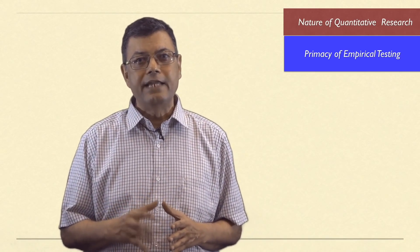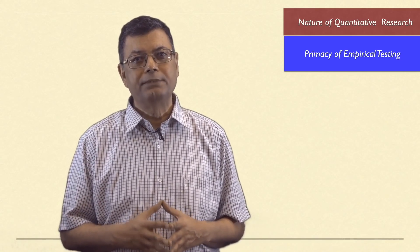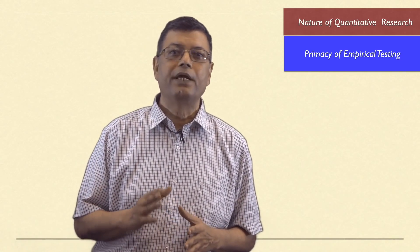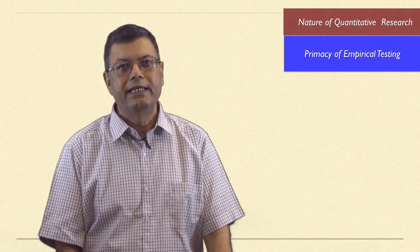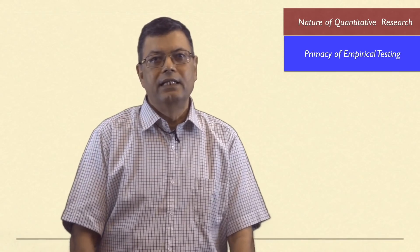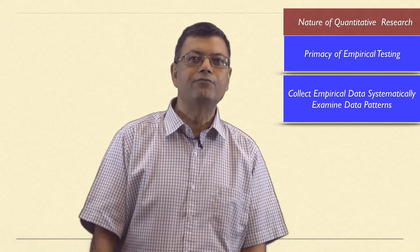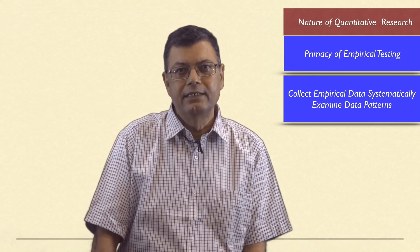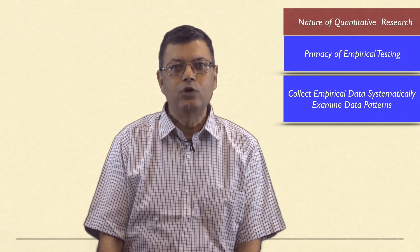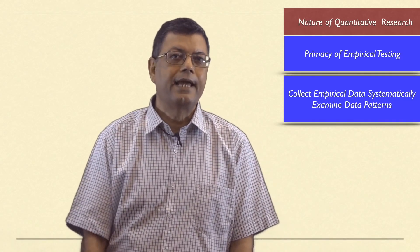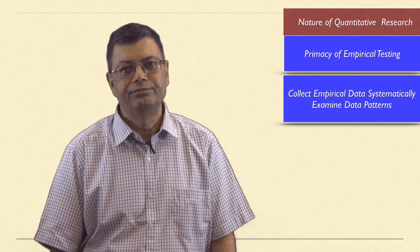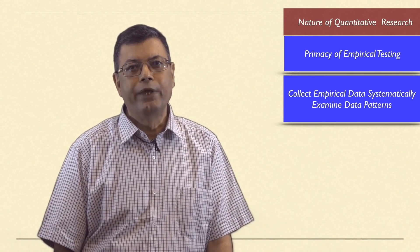Finally, scientific inquiry needs to subject its findings to peer review. To summarize, in all research, we strive to collect empirical data systematically and to examine data patterns so that we can better understand and explain social life. This can be accomplished by employing two different approaches: quantitative and qualitative.